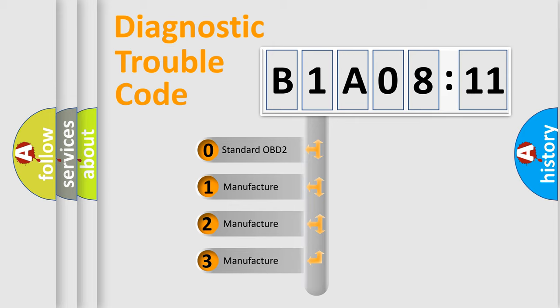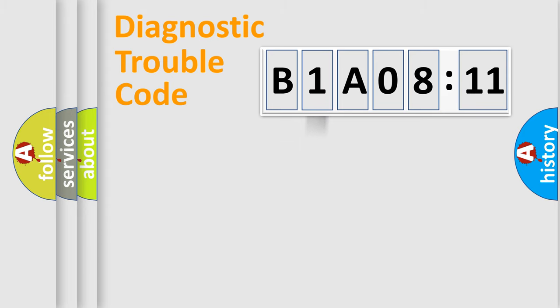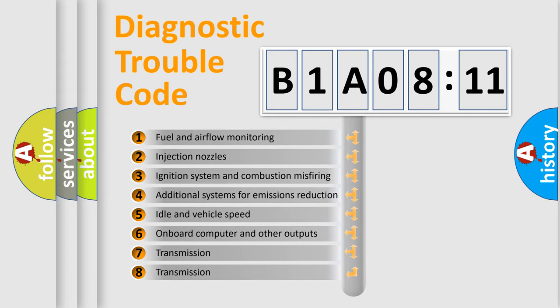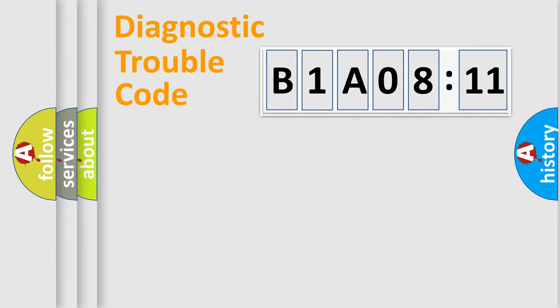If the second character is expressed as zero, it is a standardized error. In the case of numbers 1, 2, or 3, it is a more specific expression of the car-specific error. The third character specifies a subset of errors. The distribution shown is valid only for the standardized DTC code. Only the last two characters define the specific fault of the group.